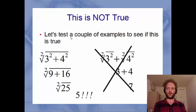But we can check a couple of examples to see if this is actually true. So check this out. We've got square root of 3 squared plus 4 squared, which simplifies to 9 plus 16, or square root of 25, which is just 5.